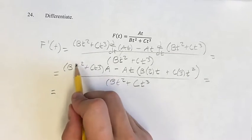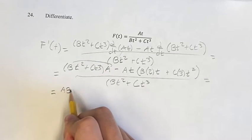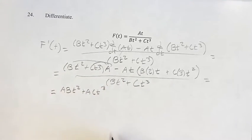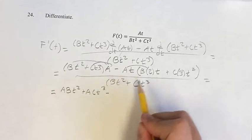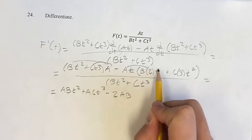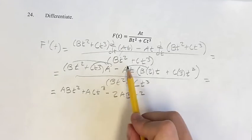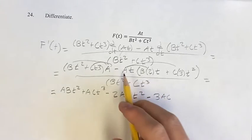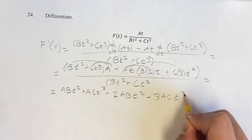This equals—distributing, we get ABt squared plus ACt cubed minus 2AB times t times t, which is t squared, minus 3ACt times t squared, which is t cubed.